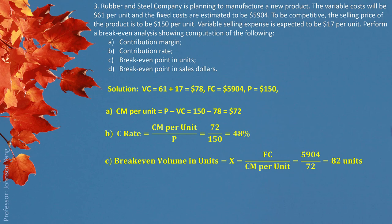For the break-even volume in units, we apply the formula directly: fixed cost of $5,904 divided by contribution margin per unit of $72 gives us a break-even quantity of 82 units. For break-even point in sales dollars, since we already have the break-even quantity, we use 82 multiplied by $150, giving us the break-even sales in dollars. Alternatively, using fixed cost divided by contribution rate gives exactly the same answer.